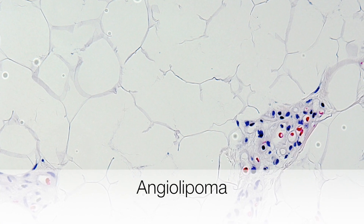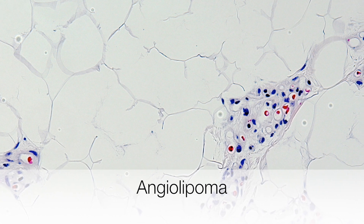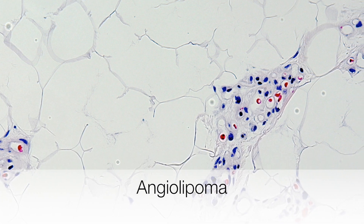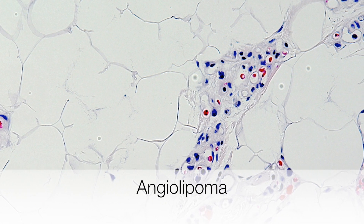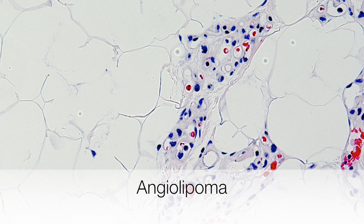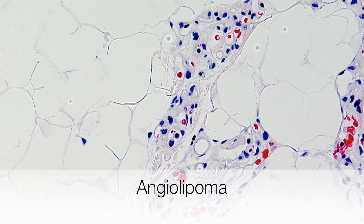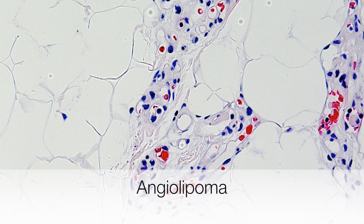This is a good example of an angiolipoma. On the left side of the picture is the mature adipose tissue, and on the right side of the picture is the vascular component.